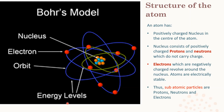Electrons carry a negative charge and the number of electrons equals the number of protons, making atoms electrically neutral. Protons are positively charged, electrons negatively charged, and neutrons carry no charge but have a mass almost equal to protons. Atomic mass = number of protons + number of neutrons. The subatomic particles as per Bohr's model are protons, neutrons, and electrons.